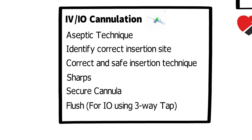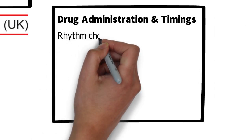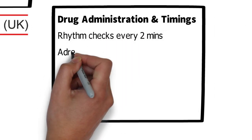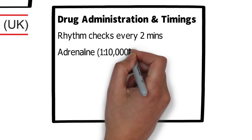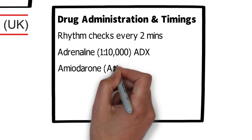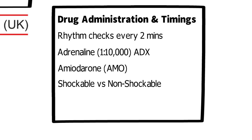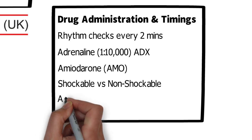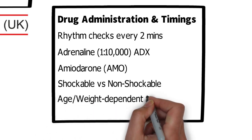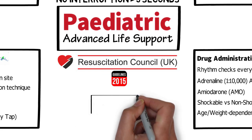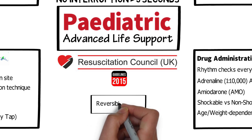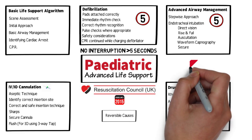Once we've gained IV access we need to consider drug administration and timings. The general principles are the same as adult advanced life support with variations in dosages. Key points are rhythm checks every two minutes, administration of adrenaline 1 in 10,000 and amiodarone — with timings dependent on whether the patient is in a shockable or non-shockable rhythm. Dosages are age or weight dependent. Once we've considered all of this, similar to adult ALS, we can start to think about reversible causes.